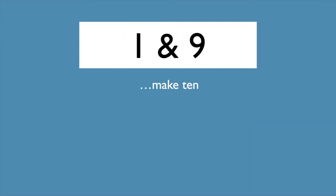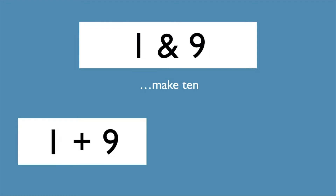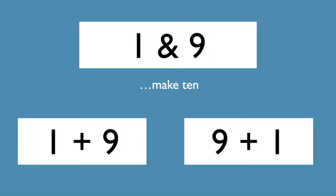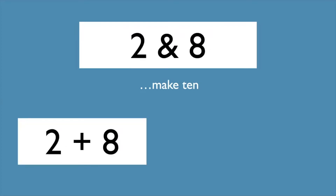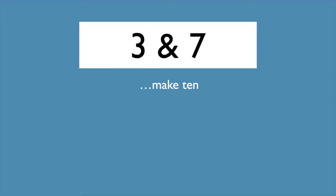One and nine make ten. Add them both ways: one plus nine, nine plus one. Two and eight make ten. Add them both ways: two plus eight, eight plus two.